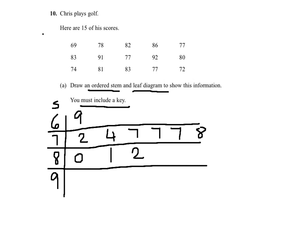82, 83, 83, 86, then 91 and 92. The key is let's say 7 slash 2 means 72.